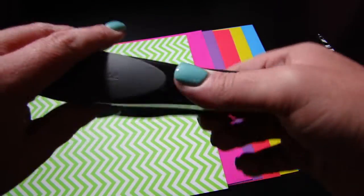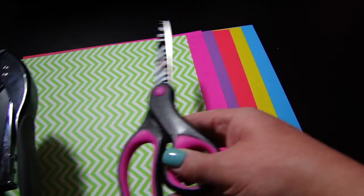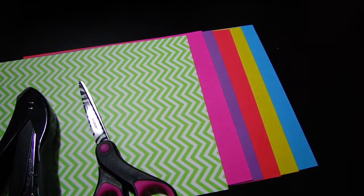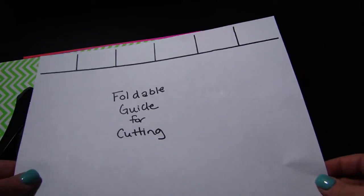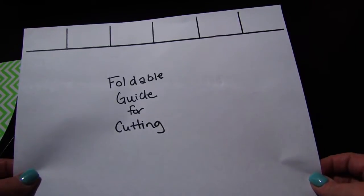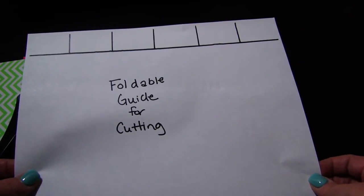You're going to need a stapler, a pair of scissors, and then you are also going to need your guide for cutting the foldable and cutting off each piece that you're going to need.